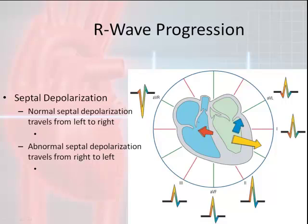In abnormal septal depolarization, if a block is occurring in the left bundle branch, septal depolarization will occur on the right side of the septum and travel towards the left side. This is abnormal — you are supposed to depolarize from left to right, which gives you those small Q waves in the lateral leads. If you depolarize from right to left, this will eliminate those Q waves.